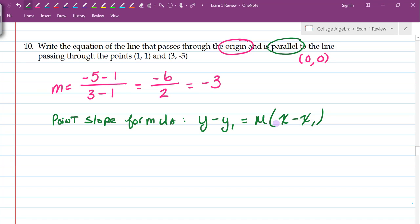And all we have to do is plug in everything that we know into our equation. So we have Y minus 0, because that's my Y, is equal to negative 3 multiplied by X minus 0, because my X coordinate at the point is the number 0. So we'll just simplify this. So we end up with Y is equal to negative 3X.